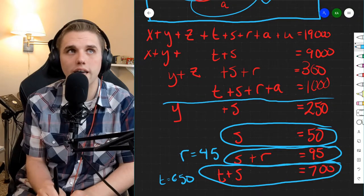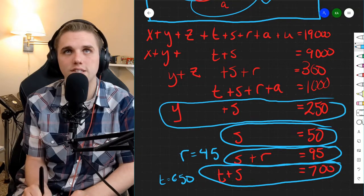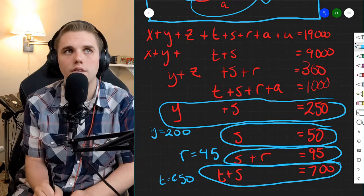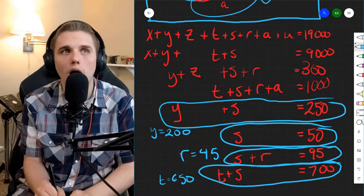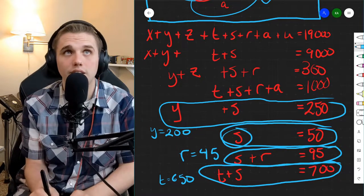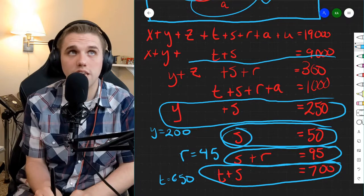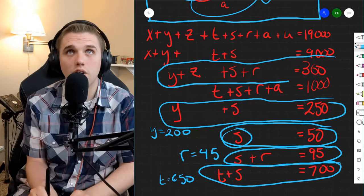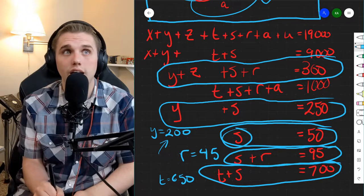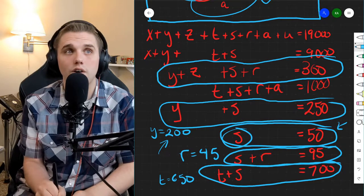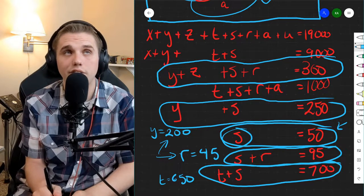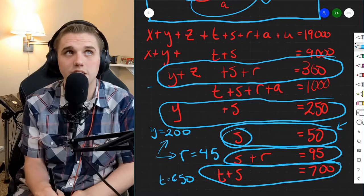Here, I can figure out what Y is since I know what S is. S is 50, which means Y is the leftover, 200. So now I know what Y, R, S, and T, so I can find what Z is since I know what Y, S, and R are. Y is 200, S is 50, and R is 45. So that's 295, which means that Z is 5.